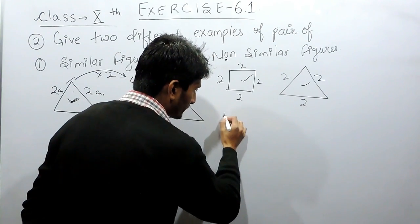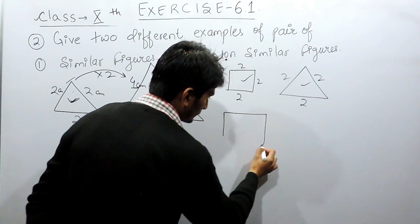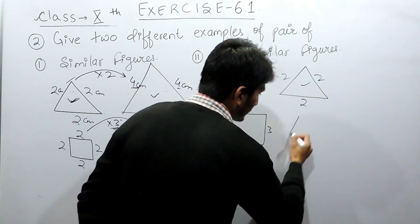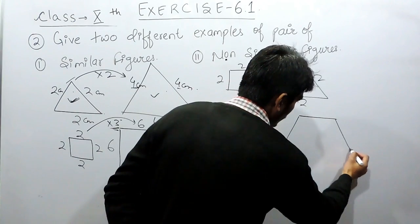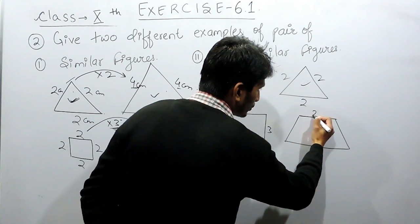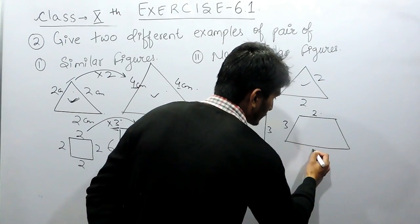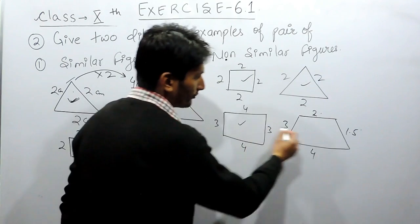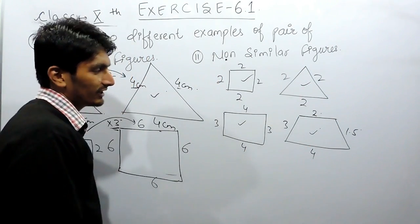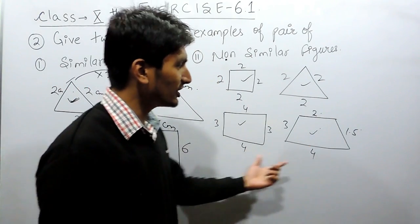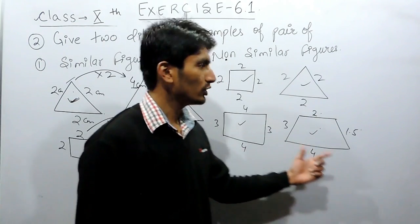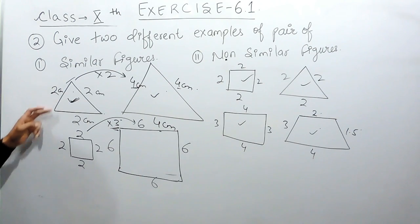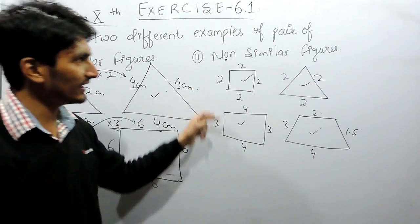Again, if I consider a rectangle of sides 4, 4, 3, and 3, and a trapezium of sides 2, 3, 4, and 1.5, these two figures are again non-similar figures because neither the shape nor the size of these two are similar. So these two will be considered as examples of non-similar figures.